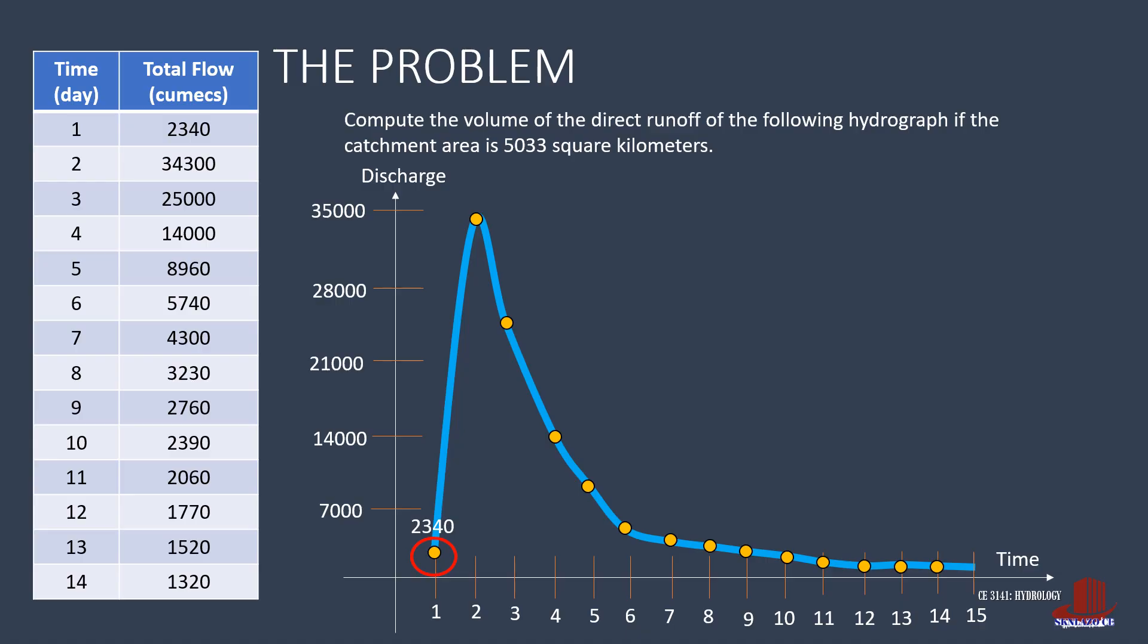Then we also have to identify the end of runoff. With a smoother recession limb, identification of the end of runoff is through a formula. That is N, which is equal to 0.8 of the area raised to 0.2. N is the number of days from the peak discharge. So, plugging in the area of 5033, we get N as 4.4, which is rounded down to 4 days. If we start at the second day, and N is 4 days, the end of runoff is then on the sixth day, with total flow of 5740.